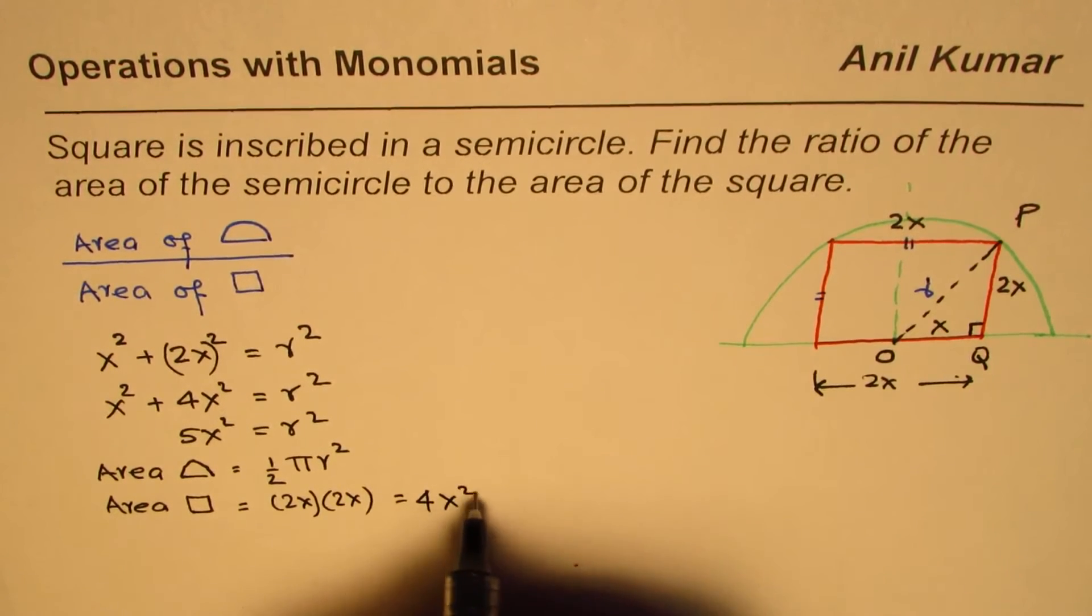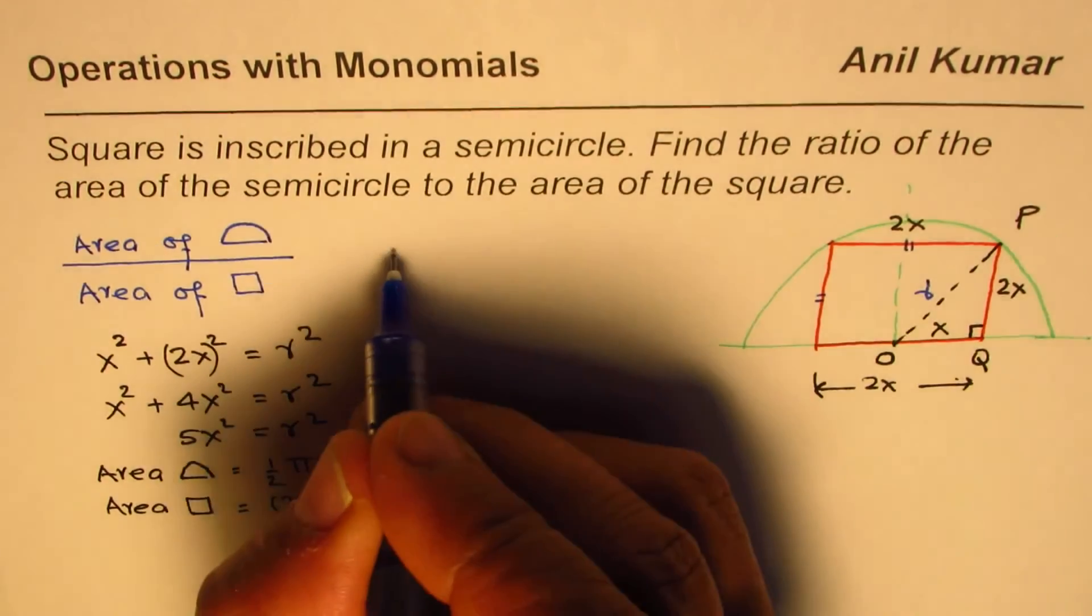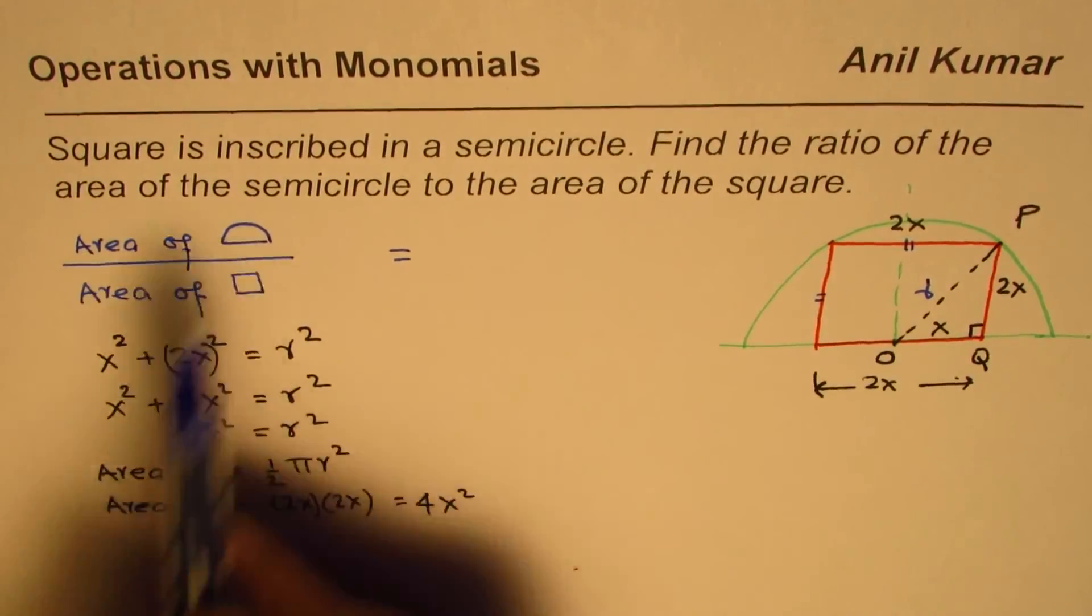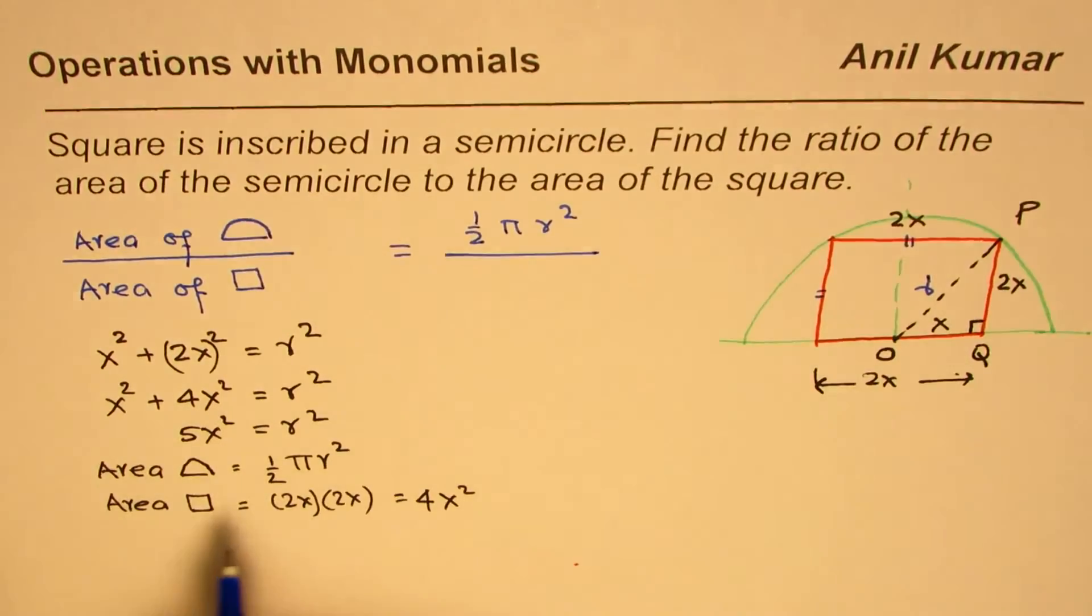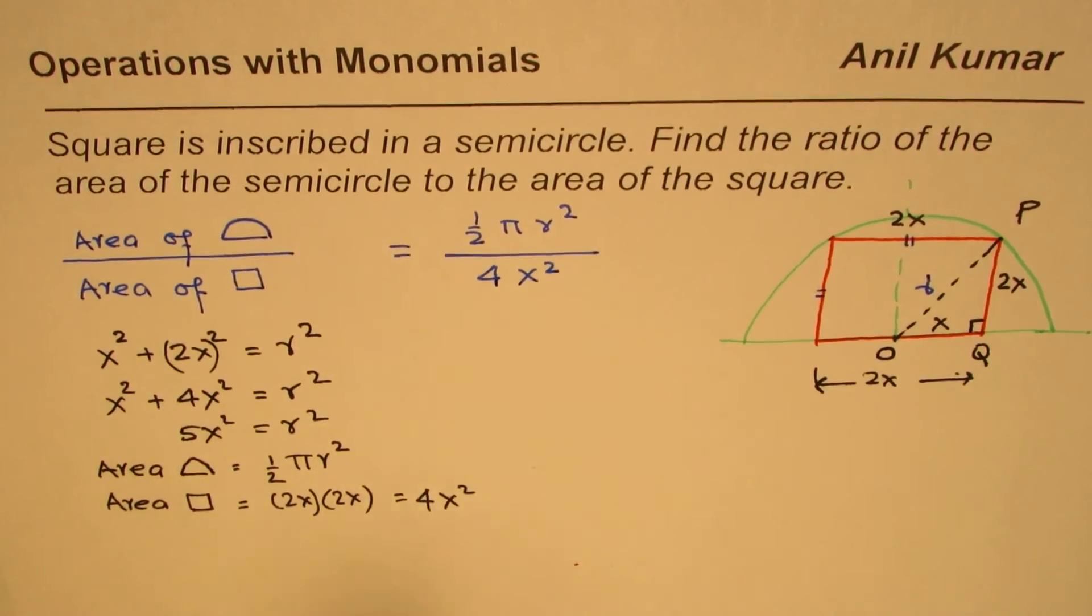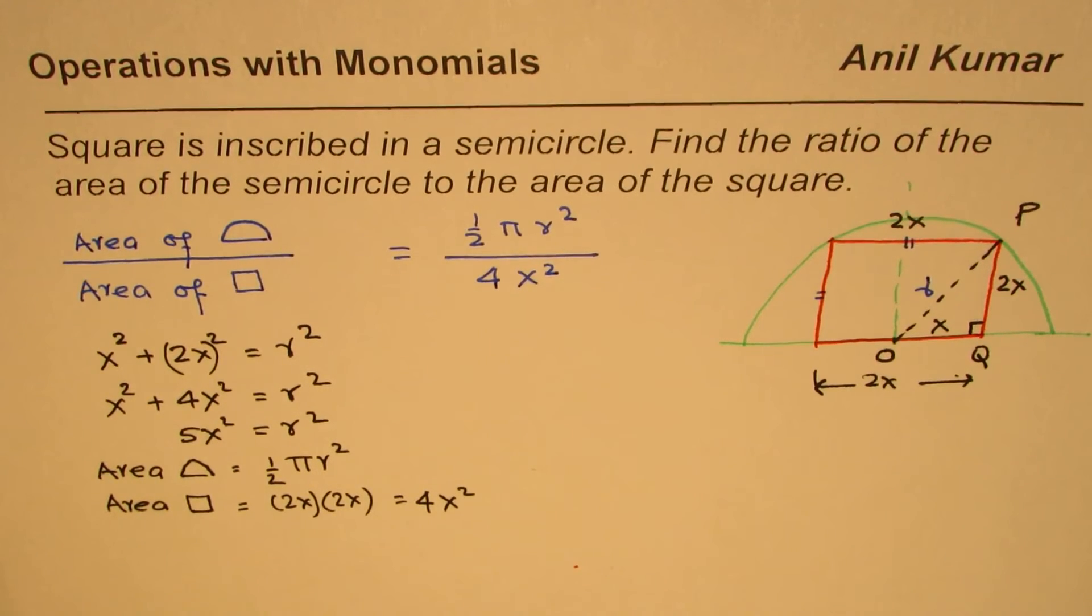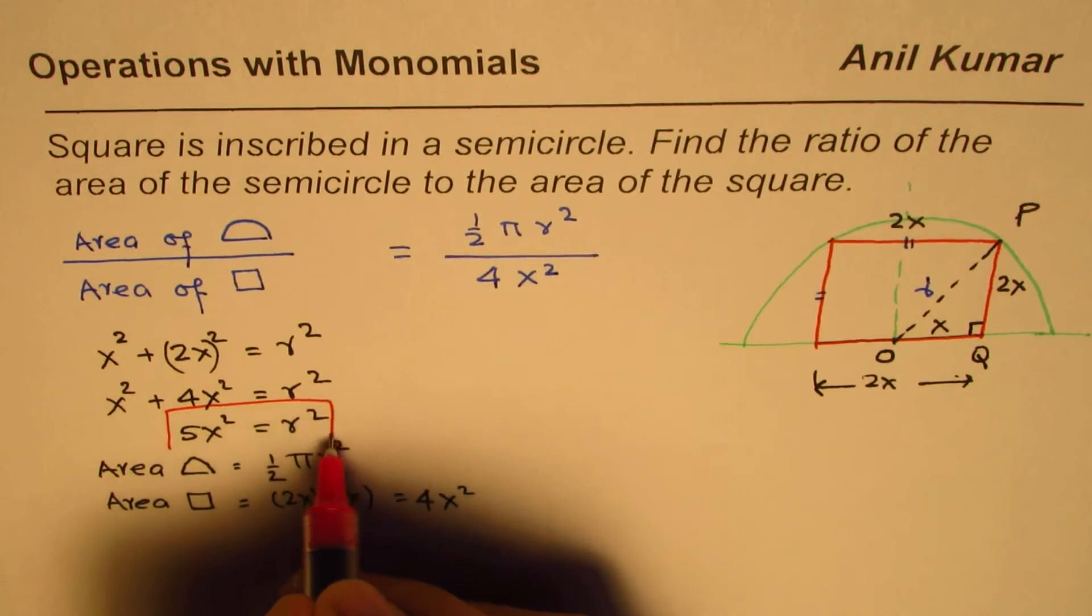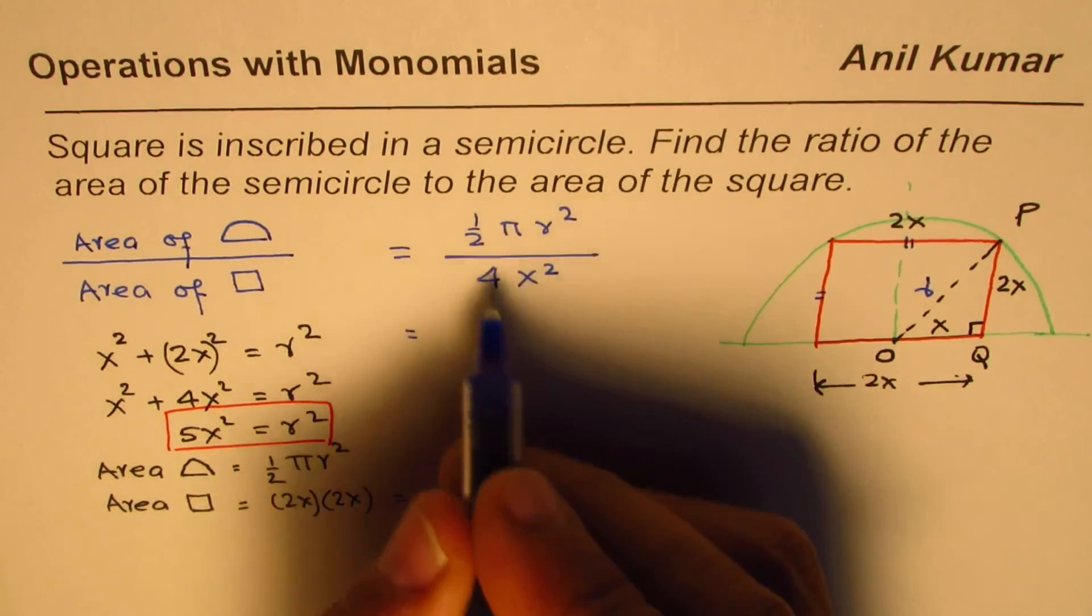So that is the area. From all this we can now write down: area of semicircle over area of square. Area of semicircle is ½πR² divided by area of square, which is 4x². Now from here we have two different variables, and we also found a relation between them—that is the relation, R² = 5x². So we can replace R² with 5x².